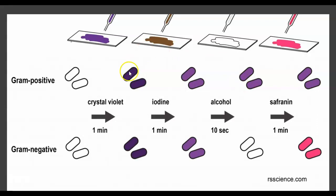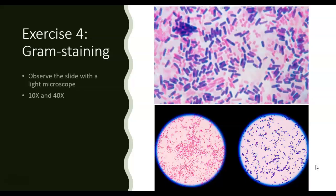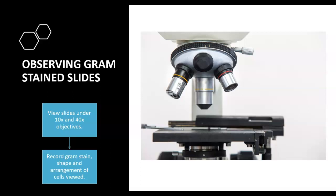What you'll notice is that if the bacteria are gram positive, they will appear purple. If they are gram negative, they will appear pink. Here you can see a mix of gram positive and gram negative bacteria — here's the gram negative and here's the gram positive. Bacteria are best seen under the 100X objective, which requires oil and is used in microbiology. For general biology, you will be using the 10X and 40X to look at bacteria. Also pay attention to the shape and the arrangement of the bacteria when you look at them under the microscope.